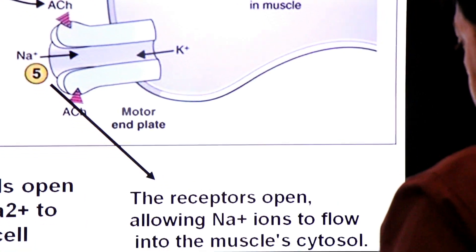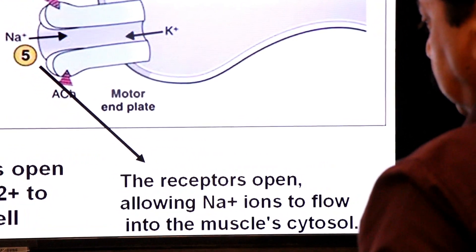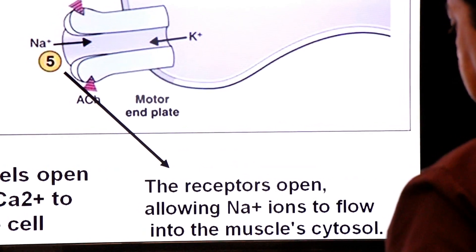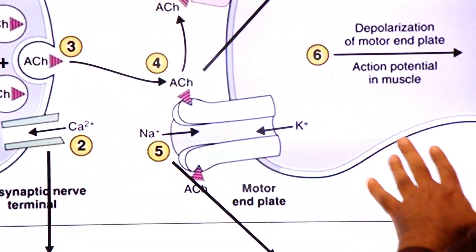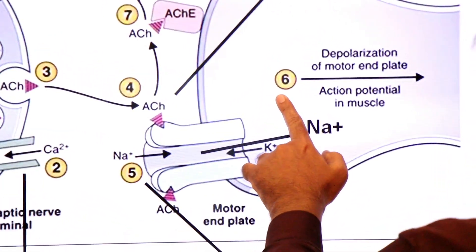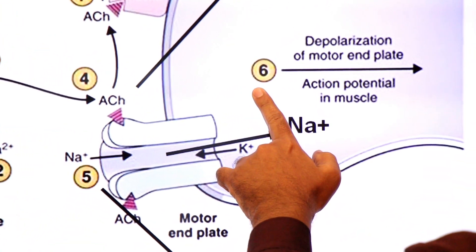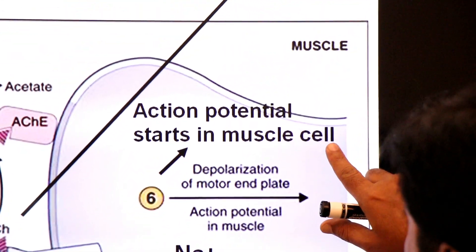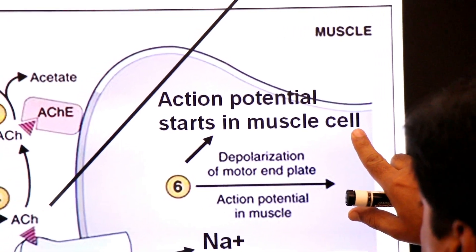Step 5: the receptors open, allowing sodium ions to flow into the muscle cytosol. As sodium ions enter, an action potential — an electrical signal — starts in the muscle cell.